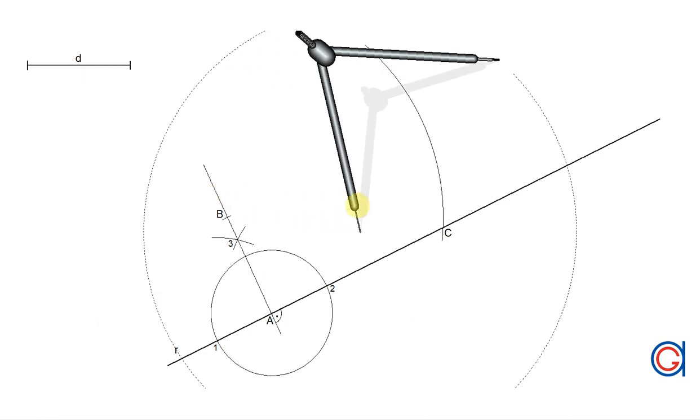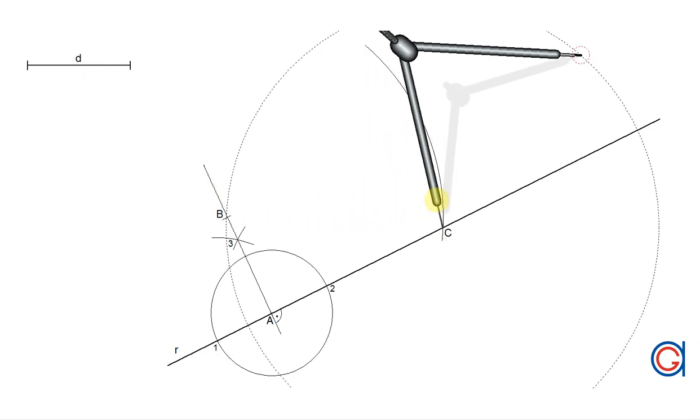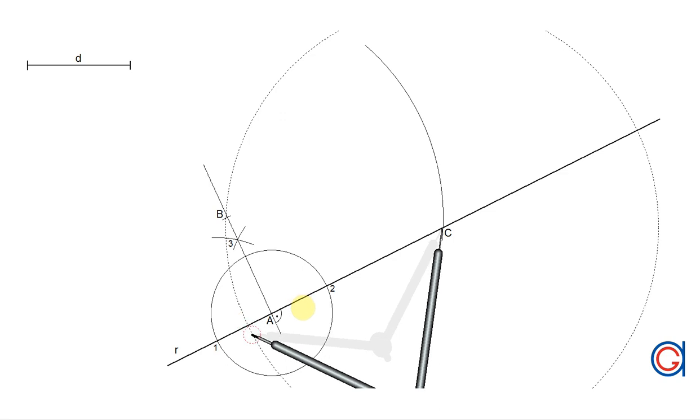Now with the same radius and setting the compass on point C we're going to scribe an arc to the left until it cuts our given line R at a new point which we will call point D. This line obviously goes through point B from before.